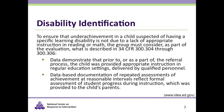Regarding disability identification, federal law states that to ensure underachievement in a child suspected of having a specific learning disability is not due to a lack of appropriate instruction in reading or math, the group must consider two things: data demonstrating that prior to or as part of the referral process the child was provided appropriate instruction in regular education settings, and data-based documentation of repeated assessments of achievement at reasonable intervals. It has always been required that to be identified as a student with a learning disability, one must rule out the possibility that their lack of achievement was due to inadequate or inappropriate instruction. The regulations following the 2004 amendments codified that requirement and connected it to response to intervention.